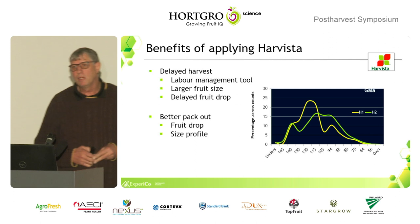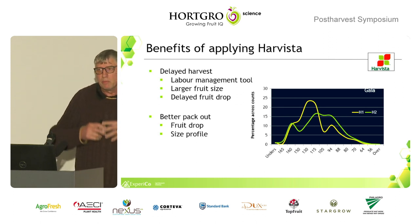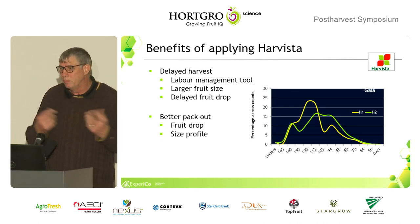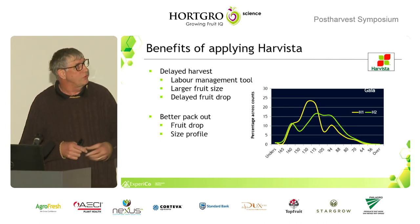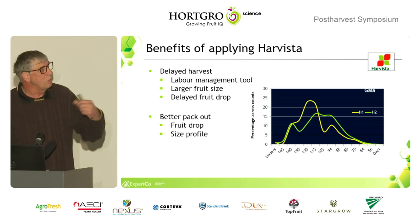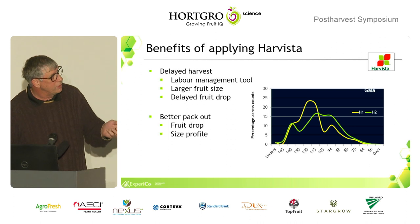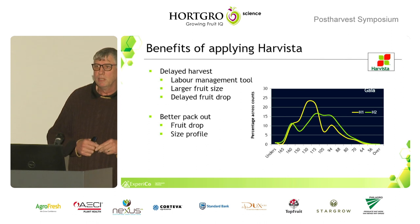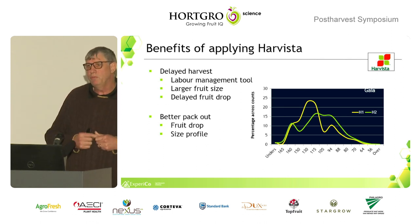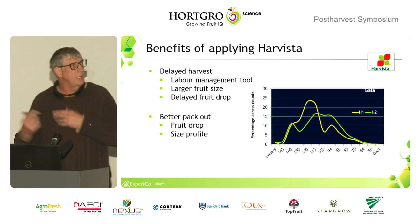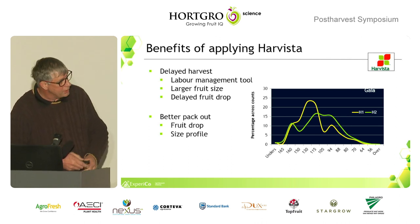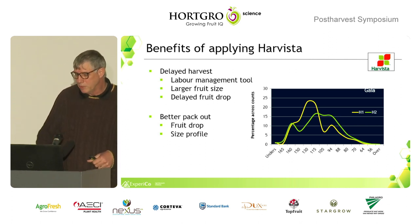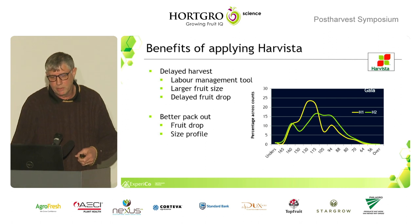What about pack out? This isn't about Harvester doing anything chemically — it's simply that the longer you leave fruit on the tree, the bigger it gets. In this commercial pack-out trial, the normal harvest (yellow line) shows a peak at a smaller pack size, but leaving fruit on the tree for an extra 7 to 10 days shifts that distribution toward bigger fruit, giving fewer fruit per carton and more cartons overall — so economically it can make sense.